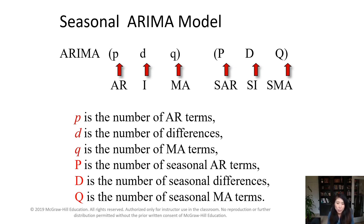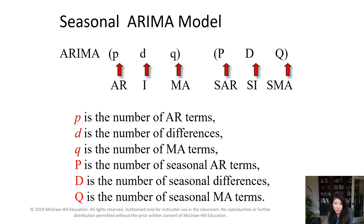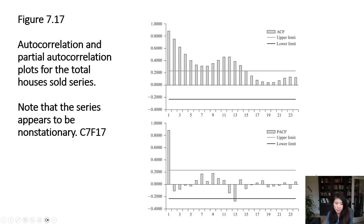Without ForecastX, we would actually have to de-seasonalize the data first to estimate the values for p, d, and q before we can use ARIMA. But since we have ForecastX, it does everything in one step — as you click the button, there are many iterations going on to identify the best values for p, d, q and also the best values for the seasonal P, D, and Q.